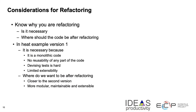That brings us to thinking about the considerations before we begin refactoring. The first thing you must be convinced about is to know why you are refactoring — do you really have to refactor, and what should your code look like after refactoring? In the heat equation example, if we only had the monolithic spaghetti code, refactoring is necessary because it is not good coding practice, there is no reusability, devising tests for it is extremely hard, and extensibility has not been built into the structure.